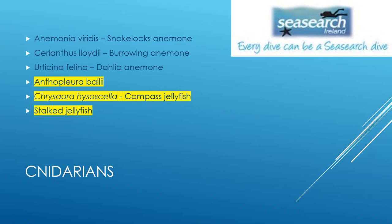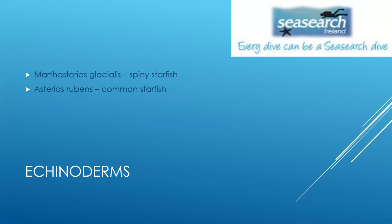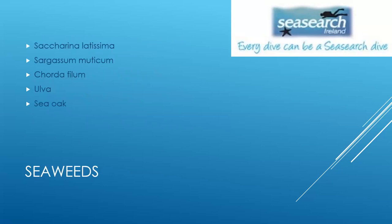There are about six cnidarians you should really be looking out for: snakelocks anemones, beadlet anemones, daisy anemones, Antiplora ballii — which doesn't seem to have a common name — compass jellyfish, and stalked jellyfish, which is actually a group of small stauromedusae rather than true jellyfish. In terms of crustaceans, all the common species are there. For seaweeds, things like sugar kelp, wireweed, Cordylophora, the green seaweeds, sea oak, sea beech, and the red seaweeds — though there isn't really time this evening to go into a long discussion on red seaweeds.